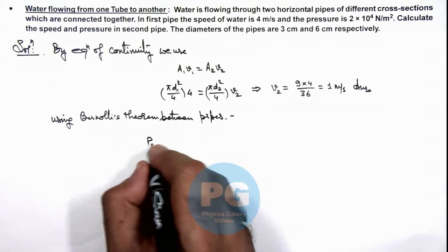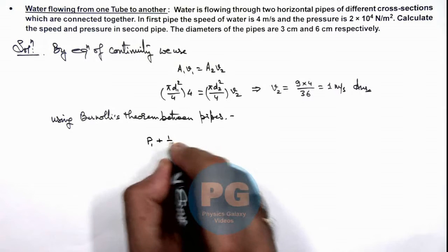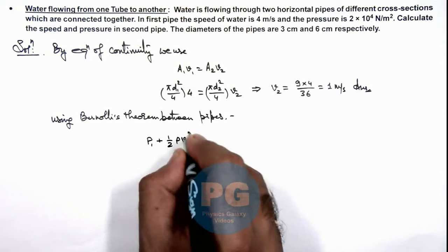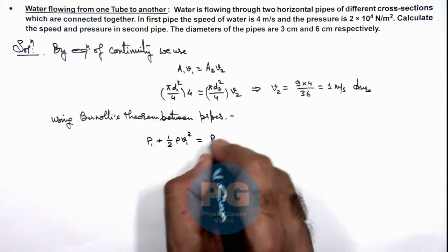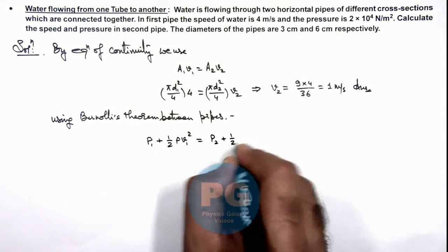We can write that for the first pipe, pressure is P₁ plus ½ρv₁² must be equal to P₂ plus ½ρv₂².